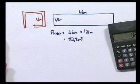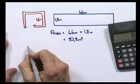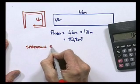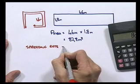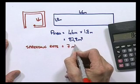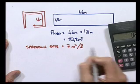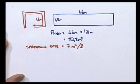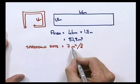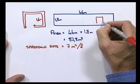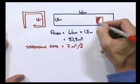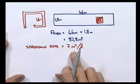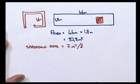We've solved the first part of the problem. Now we're told that the spreading rate is equal to 7 square meters per liter. Notice we're dealing here with a rate. But we'll come back to that. What this means is that with every liter of paint, you can paint an area of 7 square meters. Of course, this is an average rate.